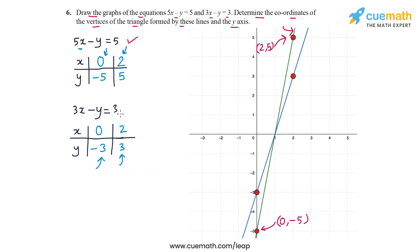Then for the second equation, this is one point, 0, minus 3 and then this is another point which is 2, 3 and this blue line passing through these two points is the line corresponding to this second equation.